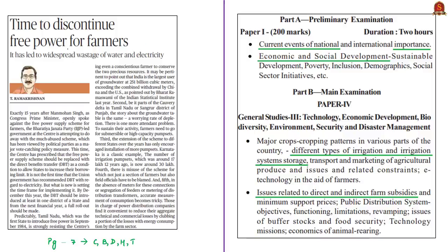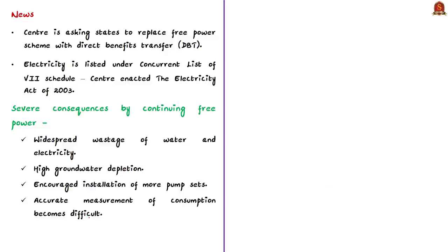This news article talks about power subsidy given to farmers — specifically, whether farmers can be provided free electricity for agriculture or not. The central government is actively pushing state governments to do away with the free power scheme and replace it with direct benefit transfer. Electricity is listed under the concurrent list of Schedule 7 of the Indian Constitution, so both state and central governments can legislate on this subject. The central government brought the Electricity Act of 2003, under which the subsidy component is left to state governments.